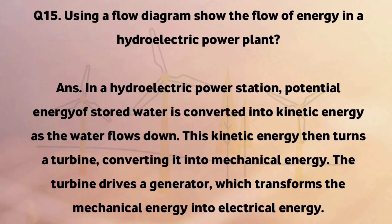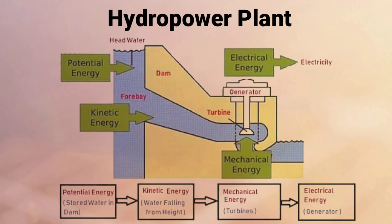Using a flow diagram, show the flow of energy in a hydroelectric power plant. In a hydroelectric power station, potential energy of stored water is converted into kinetic energy as the water flows down. This kinetic energy then turns a turbine, converting it into mechanical energy. The turbine drives a generator, which transforms the mechanical energy into electrical energy.